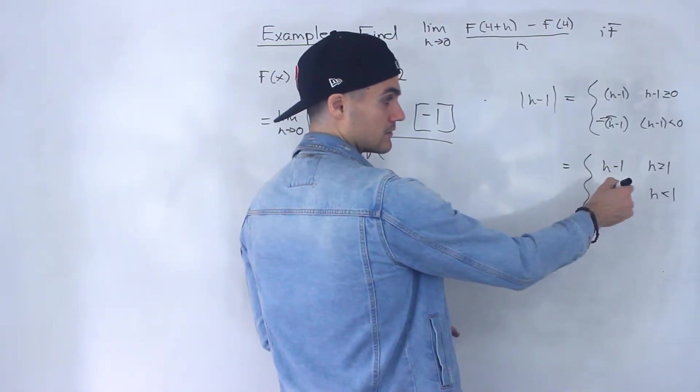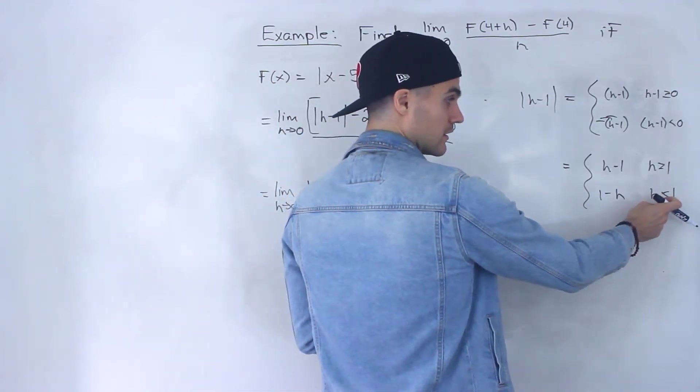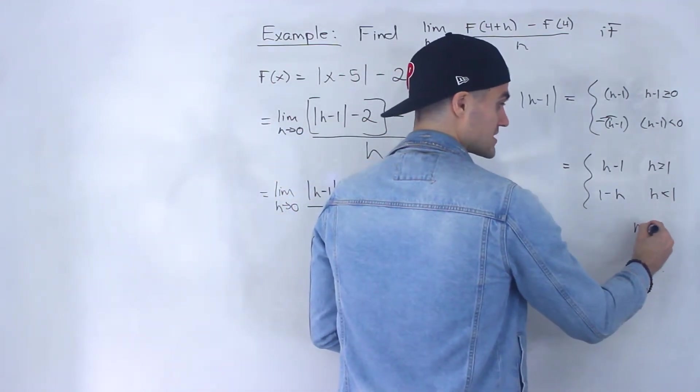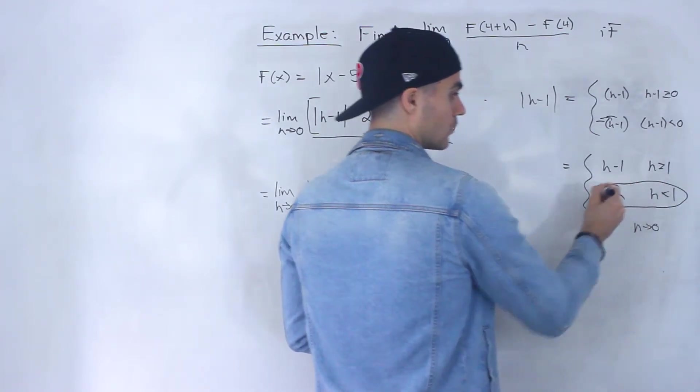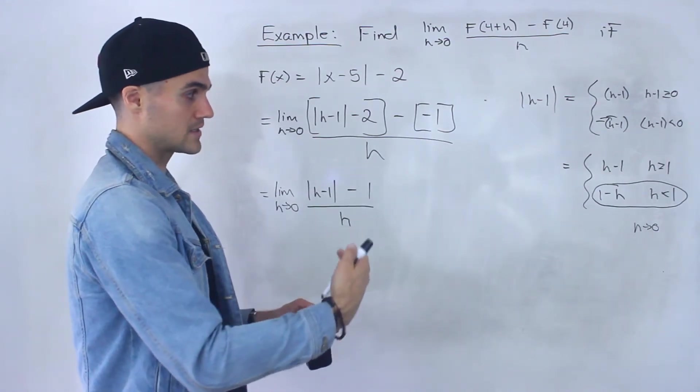So when h is approaching 0, which one of these is it going to be? Well, notice that 0 is less than 1. So as h approaches 0, it's going to fall within that interval right there. Because 0 is less than 1.